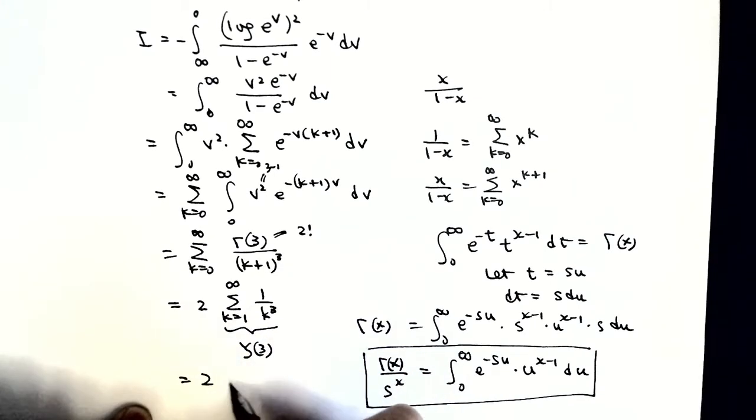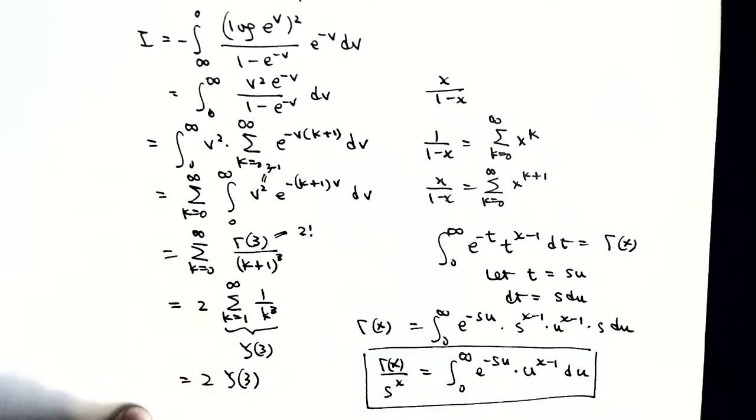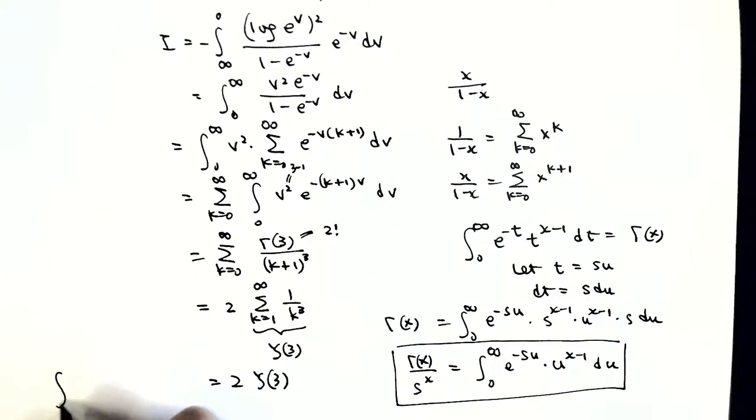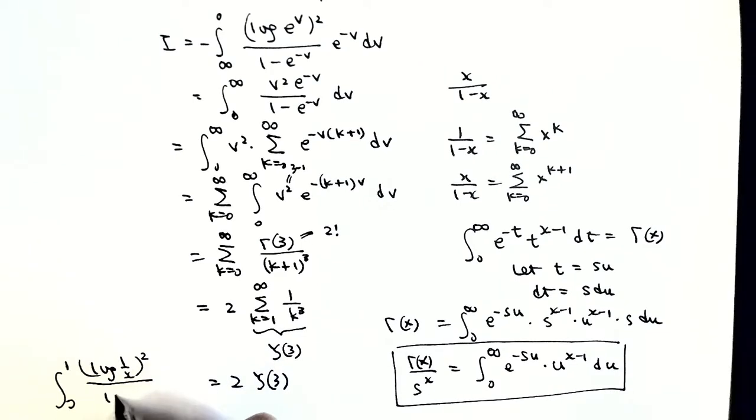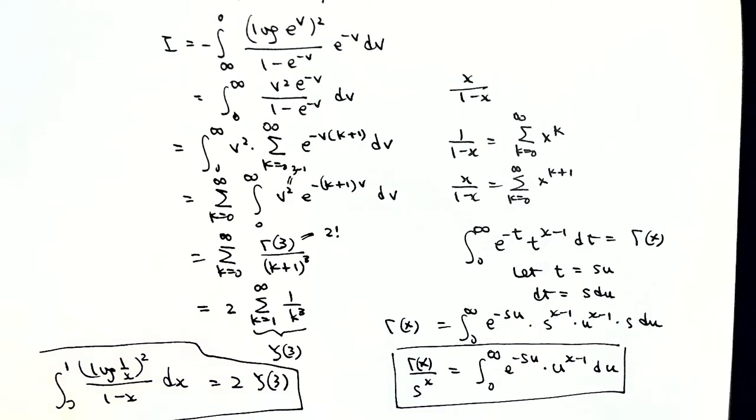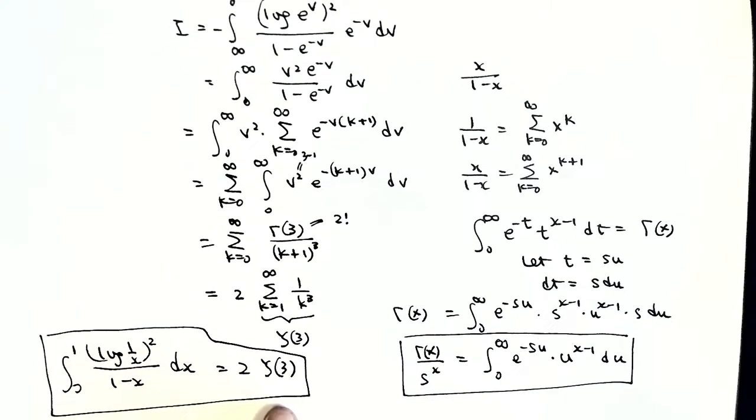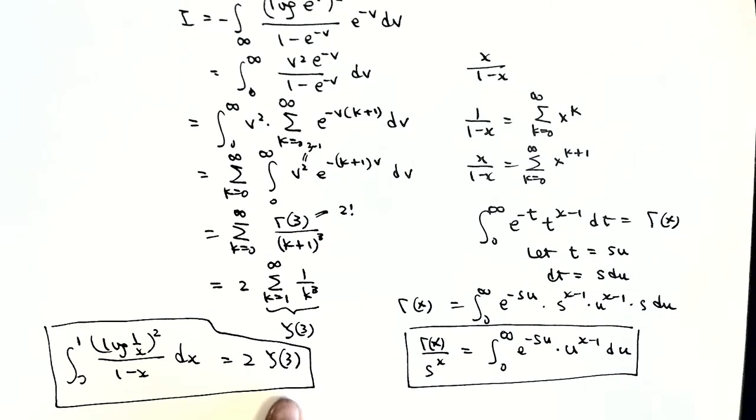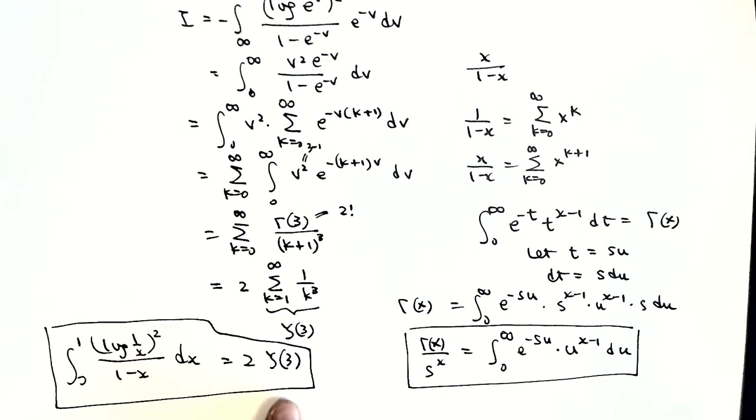So finally, we got the answer. The integral from 0 to 1 of log(1/x) all squared over 1 minus x dx is just 2 times zeta(3), also called Apéry's constant. A very nice evaluation. Thank you very much for watching this video. See you next time, bye-bye.